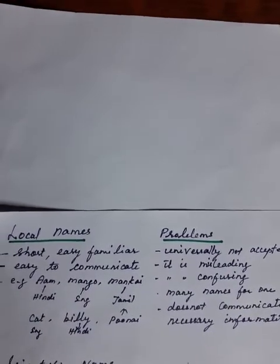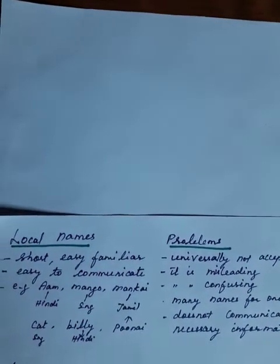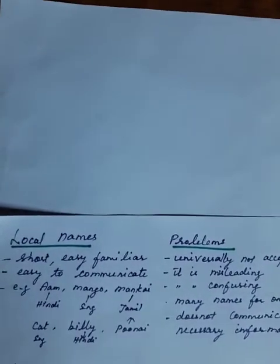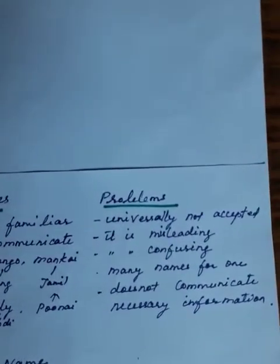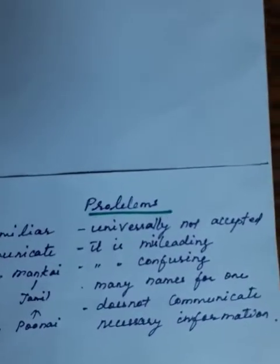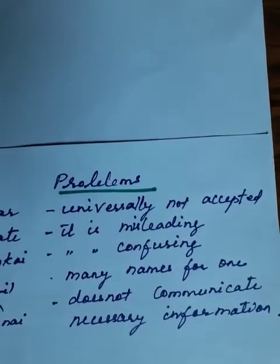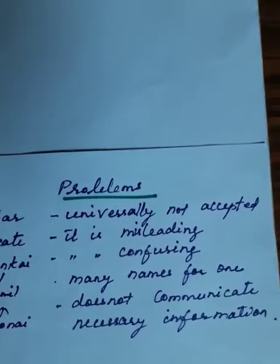But if you consider, in India alone mango may have more than 30 names, and across the whole world it may cross thousands or millions. What is the problem with local names? They are not universally accepted, they are misleading and confusing. Many names are given for one organism, and they do not communicate the necessary information.